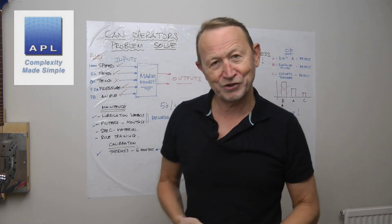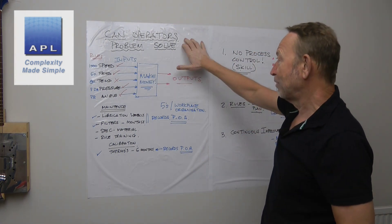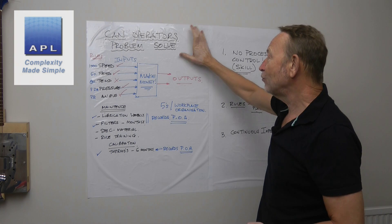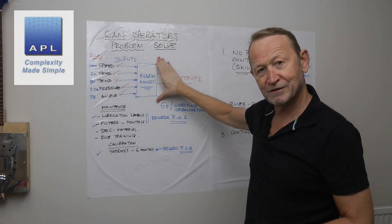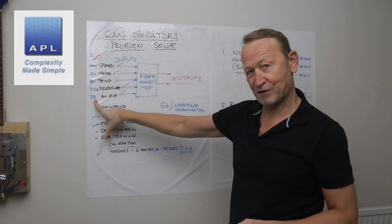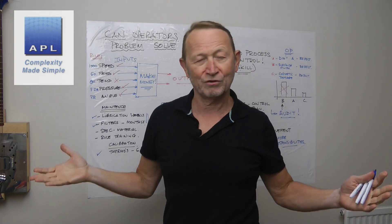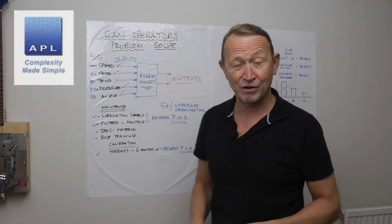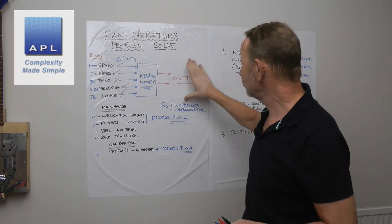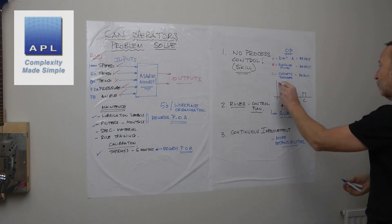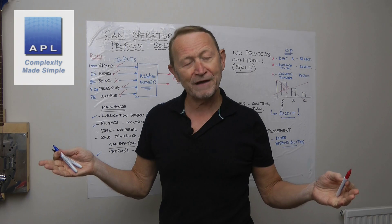Can operators problem solve? They can only problem solve if the process is explicit, and the process is explicit when you set rules. All the great companies do is set rules that work — that bring their defect rates to the lowest level — and then they make sure those rules are followed ruthlessly.